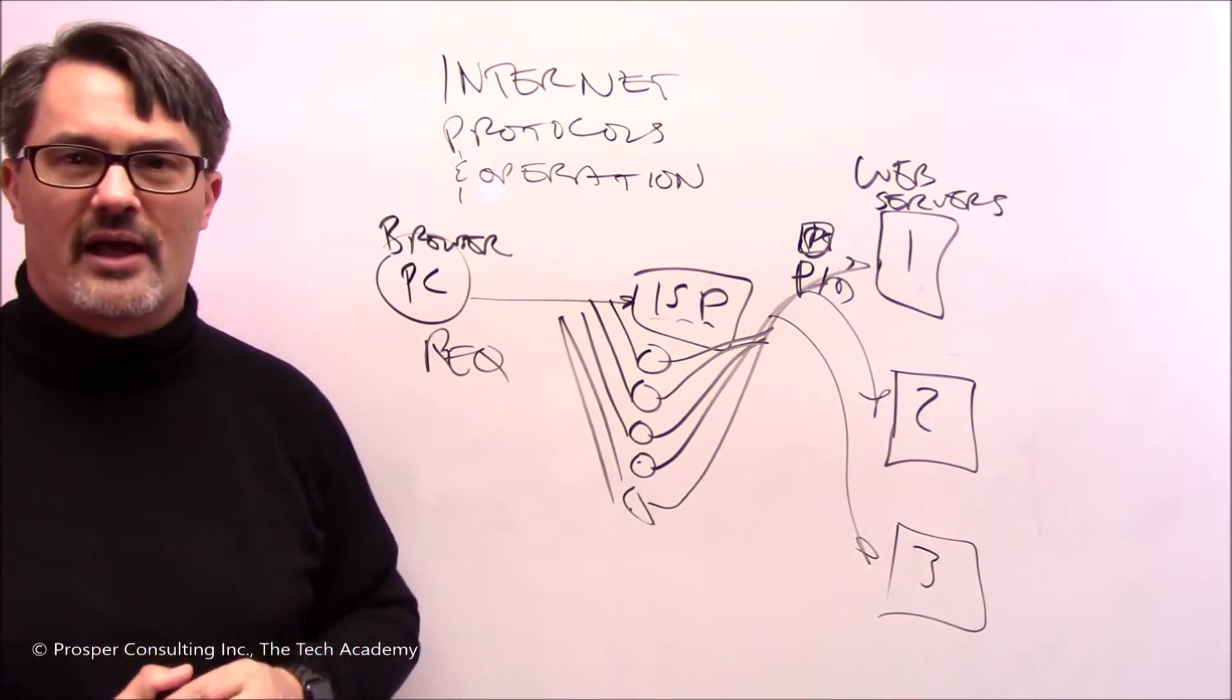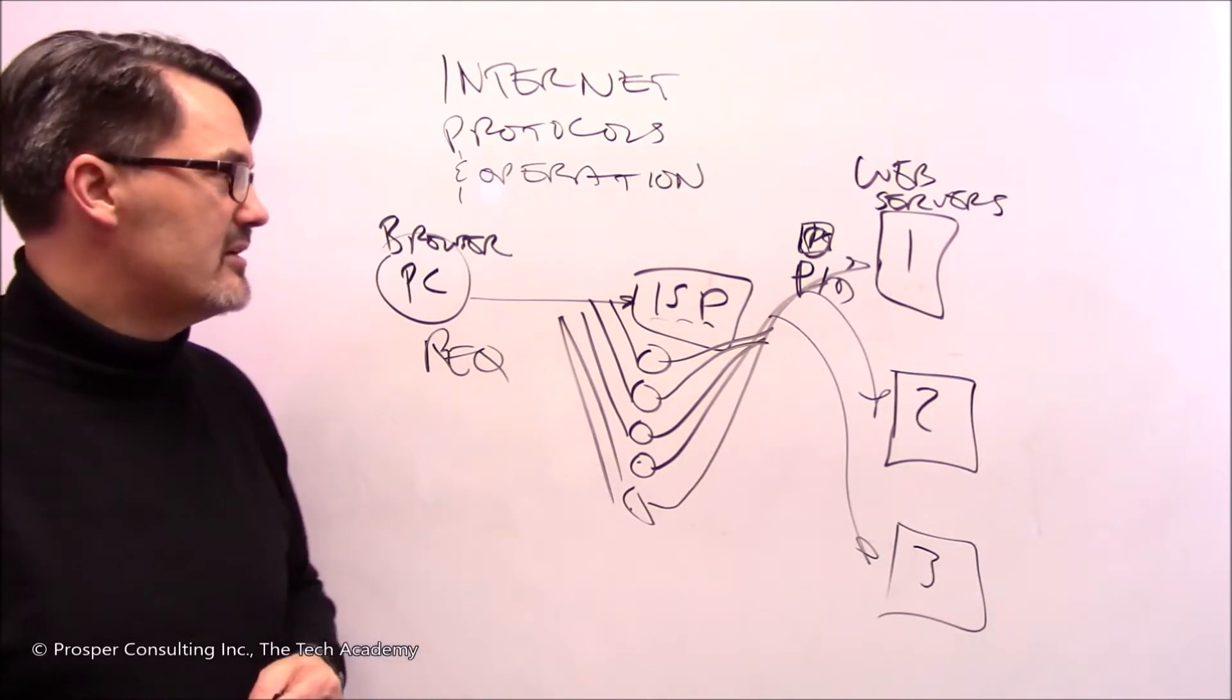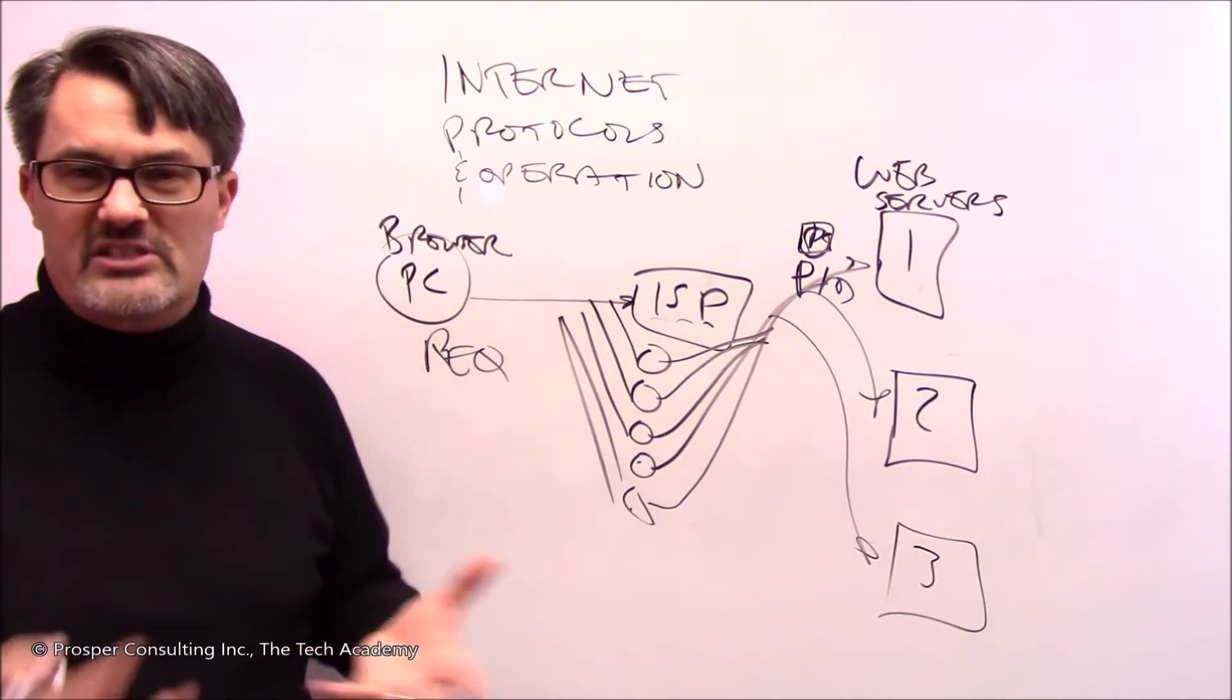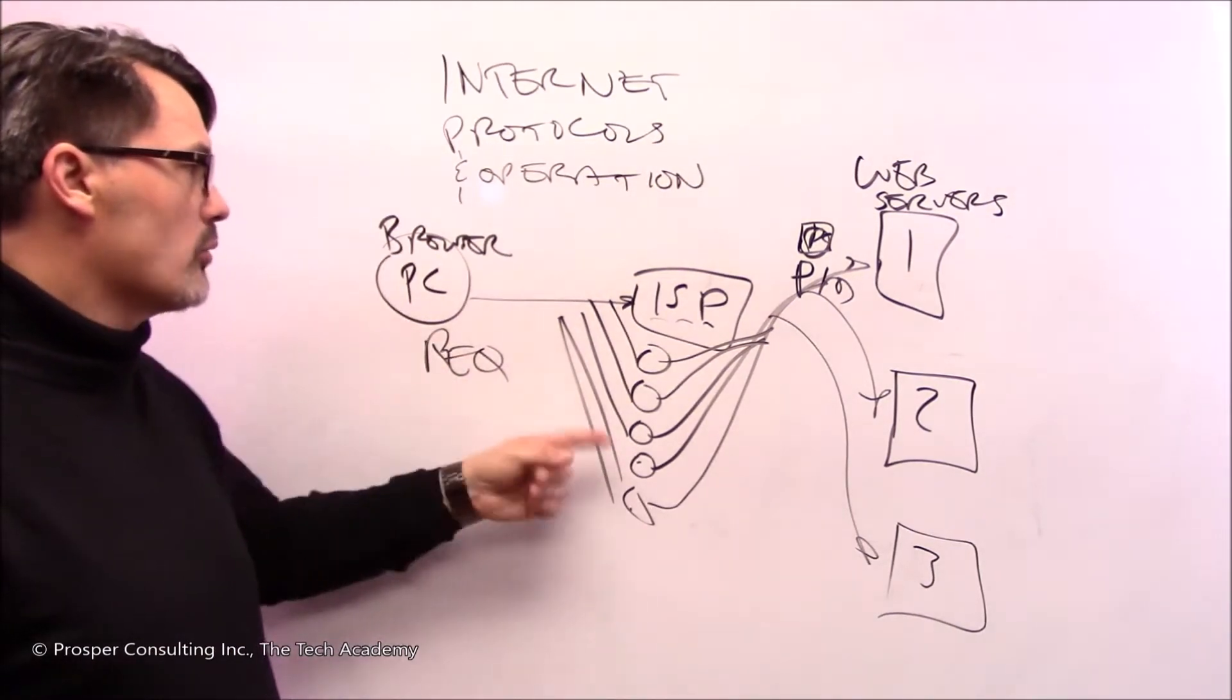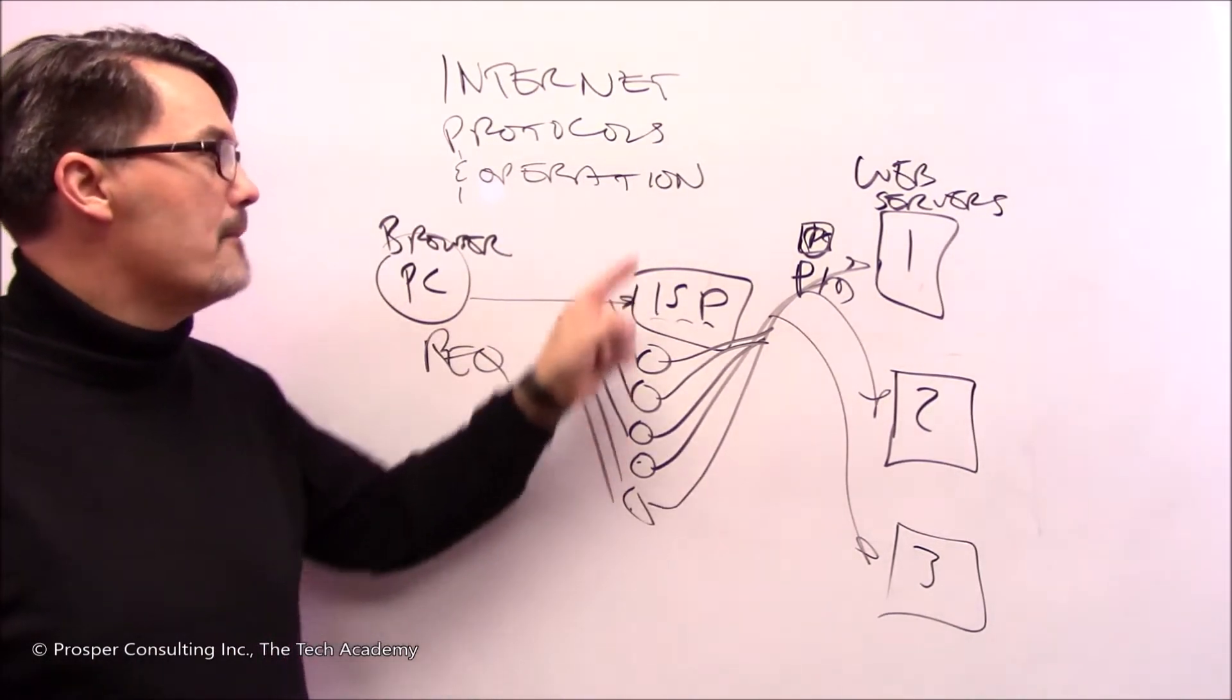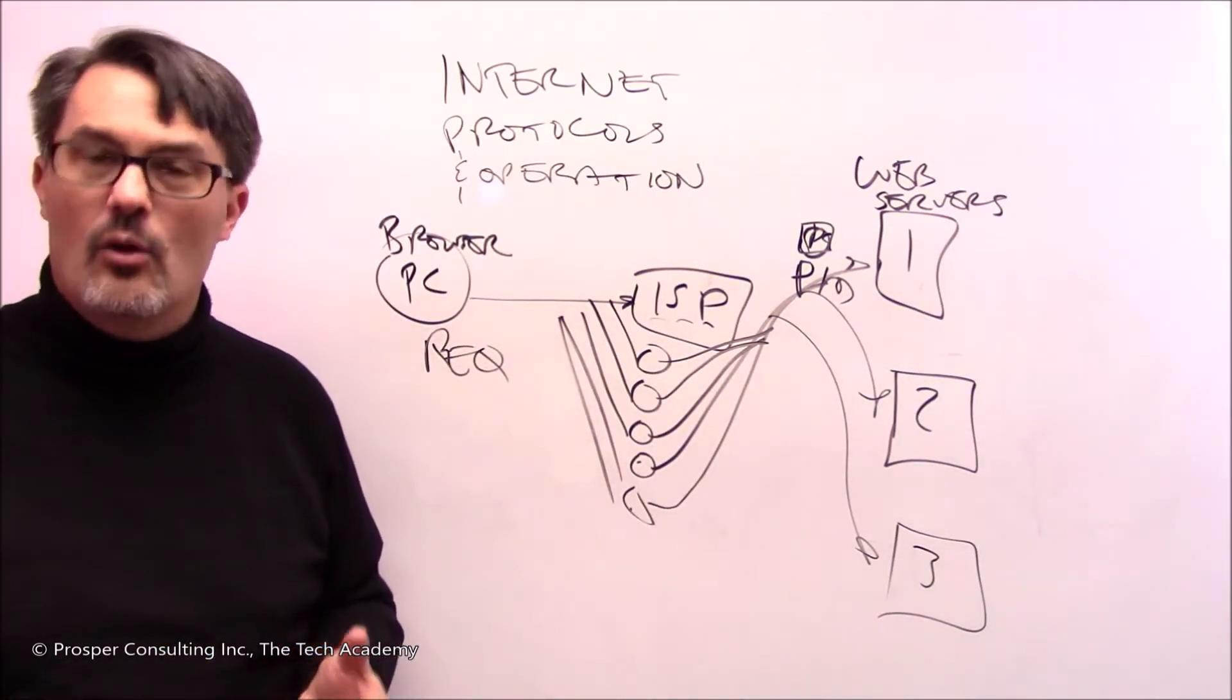So again, this is still a rather simplistic diagram. If you were going to diagram out the internet, well one, you wouldn't do it because you wouldn't have enough time. You'd have to live several lifetimes. And two, it would be spaghetti. But the basic concept is this: any one individual request or response might route through many different computers on its journey.